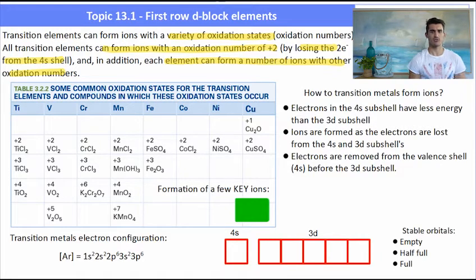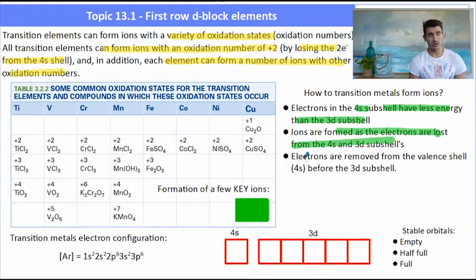So how do the transition metals form these ions? Well electrons in the 4s subshell have a little less energy than the 3d subshell but they are very close in terms of energy. The ions will lose them from the 4s first and then they'll start to lose the 3d. Electrons are always removed from the 4s before the 3d.